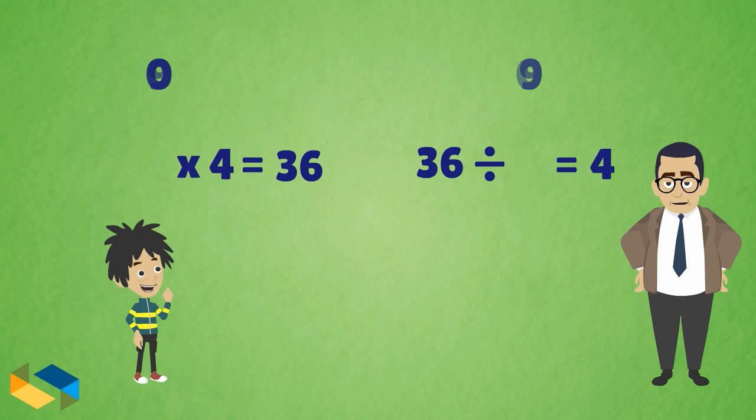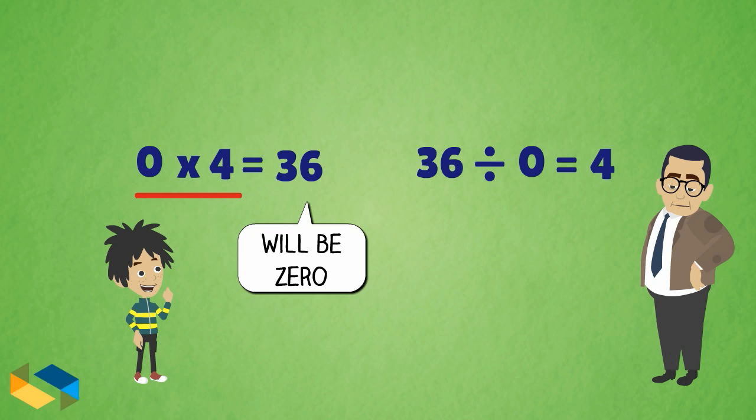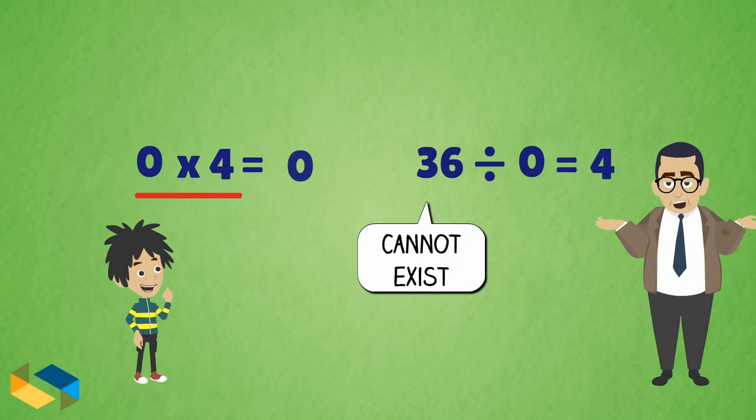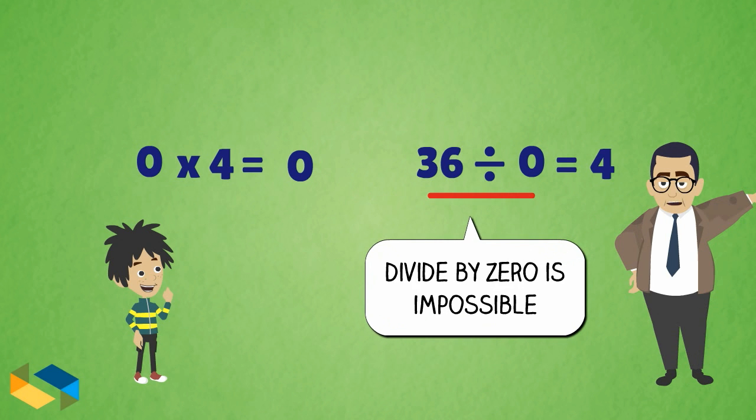If we have to divide any number by 0, one of the factors in the multiplication expression also has to be 0. The product, in this case, will be 0 as well, which would mean that the number to be divided would not exist. So, division by 0 is impossible or is undefined.